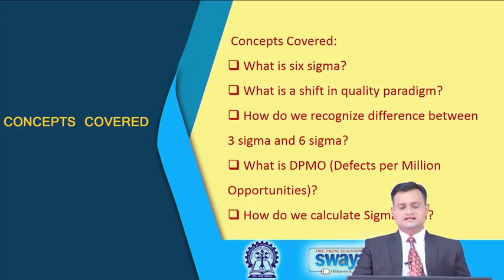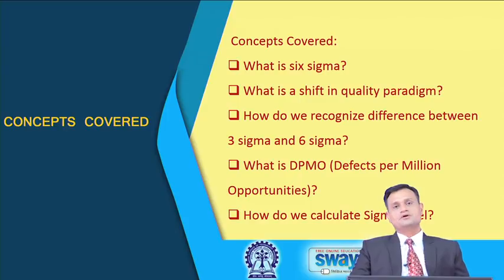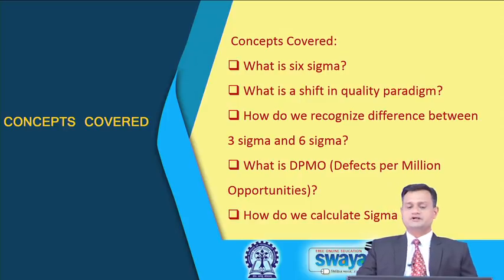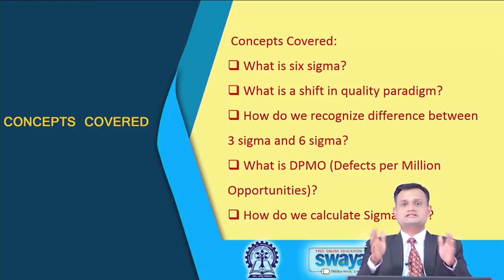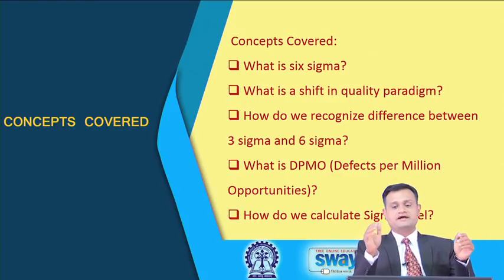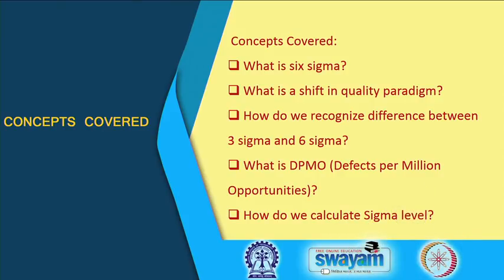We have also seen that in Six Sigma, variation is the enemy. If you can have better control over variations, your processes will improve and in turn you are improving on the Sigma level. We also discussed Lean Six Sigma and what kind of synergistic effect — in terms of waste reduction through Lean and variability reduction through Six Sigma — an organization can achieve.